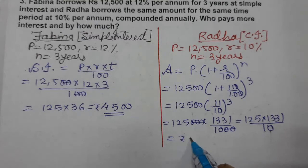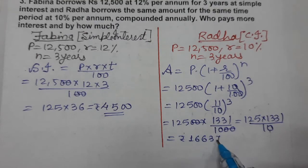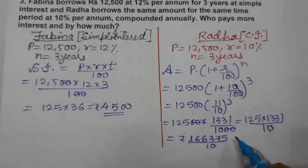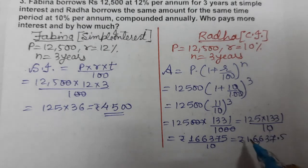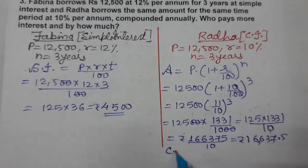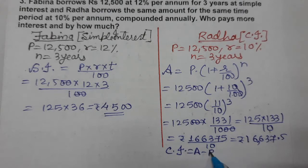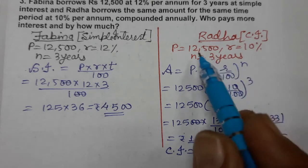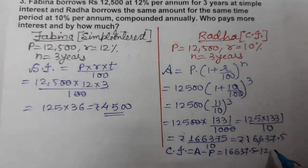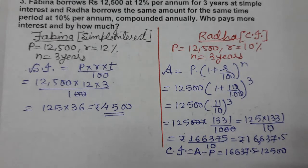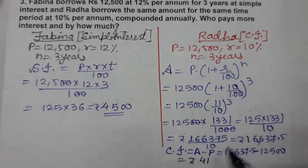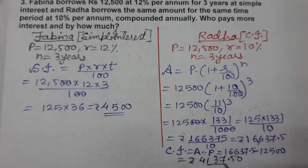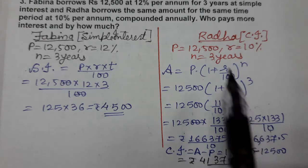The answer is rupees 16,637.5. This is the amount. Now compound interest equals amount minus principal. Amount is 16,637.5 minus principal 12,500. Subtracting, we get rupees 4,137.50.